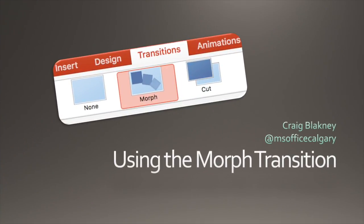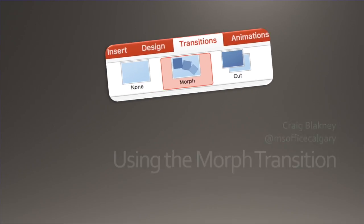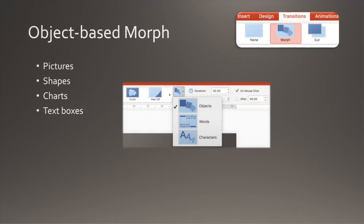There are three types of morph techniques that you access using the Effect Options command on the Transitions tab. The first is object-based. Use it when elements like photos, drawing shapes, charts, and text boxes will be reused on the next slide but in a different area, style, or size.